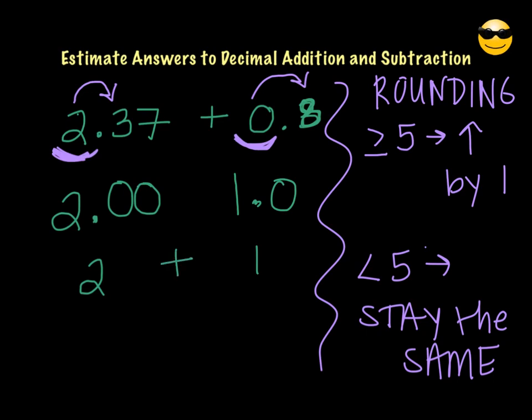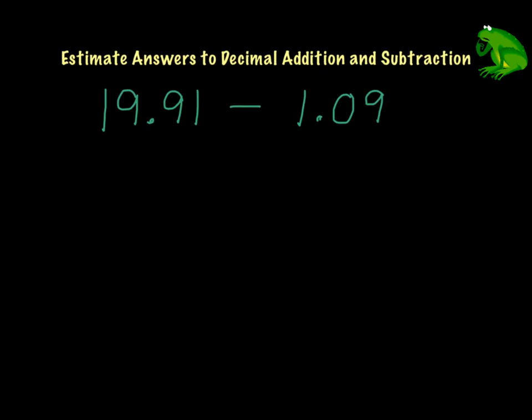So if we were to add this now, we would have 2 plus 1 would be 3. So we would suspect that if we were to actually answer 2 and 37 hundredths plus 8 tenths, it would be about 3. Let's try estimating an answer to the subtraction problem.